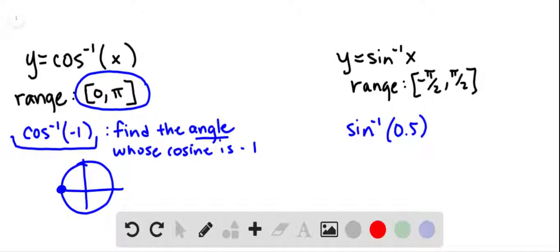When you've gone π radians, you reach the point negative 1, 0. So the cosine is negative 1. So the answer to that is π.